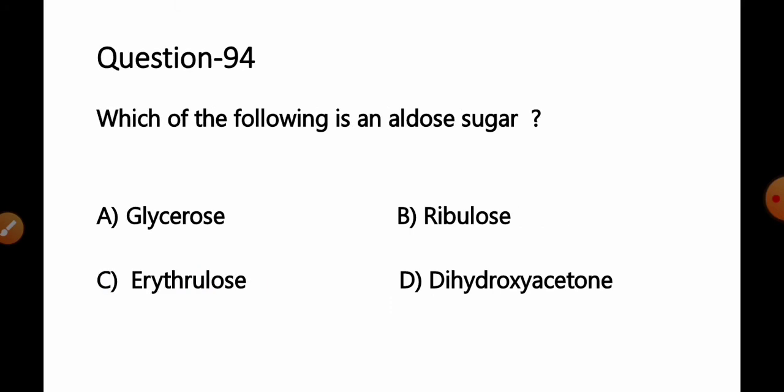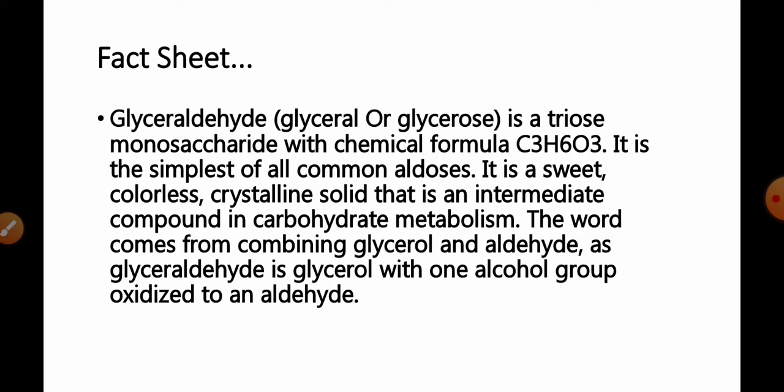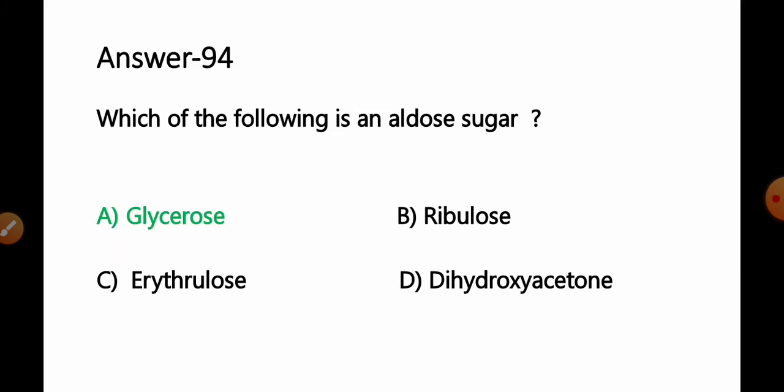Question 94: Which of the following is an aldose sugar? A) Glycerose, B) Ribulose, C) Erythrolose, D) Dihydroxy acetone. Fact: Glyceraldehyde, or glycerol or glycerose, is a triose monosaccharide with chemical formula C3H6O3. It is the simplest of all common aldoses, a sweet, colorless crystalline solid that is an intermediate compound in carbohydrate metabolism. The word comes from combining glycerol and aldehyde, as glyceraldehyde is glycerol with one alcohol group oxidized to an aldehyde. Therefore, glycerose is an aldose sugar. Option A is the correct answer.